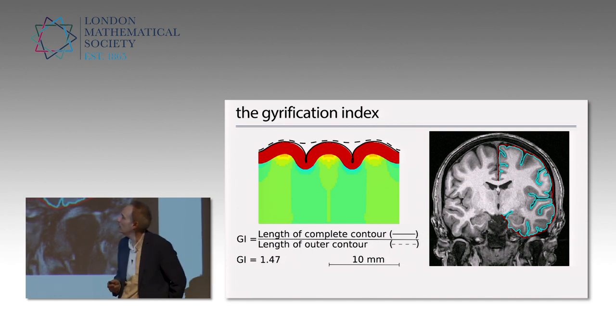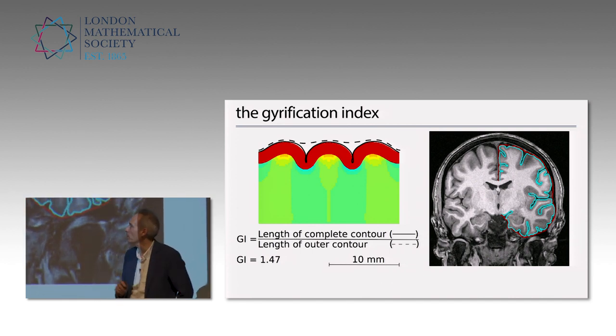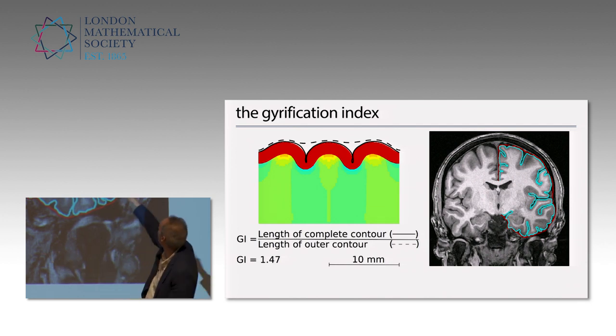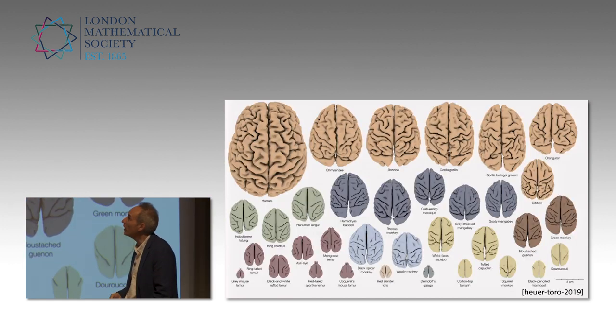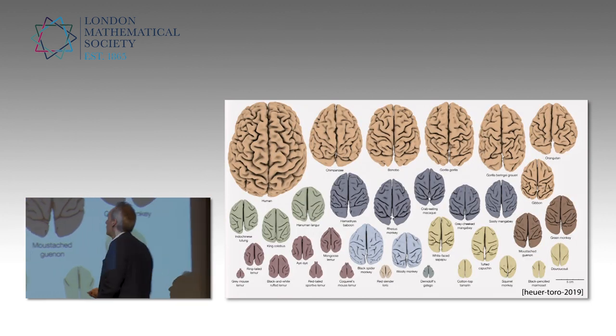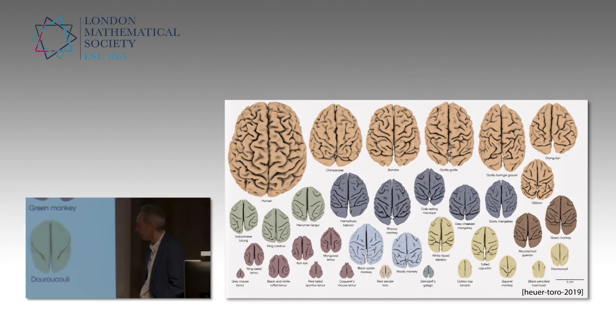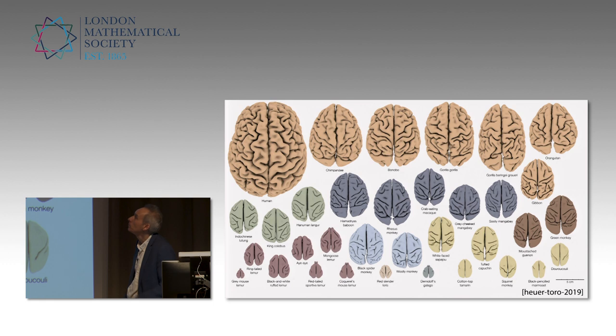Once you have that, once you have slices of the brain, what you can look at is called the gyrification index. The concept is very simple. You look at a line on top, and you look at the line you would have if you follow the convolution. You look at the ratio between the two. In this case, if you have convolution, it's 1.47. If you have flat, it would be 1. You can do that on every slice, average and all that. You can do that for primates. This is a beautiful slide from a paper by Katia Oyer and Roberto Toro in Paris.